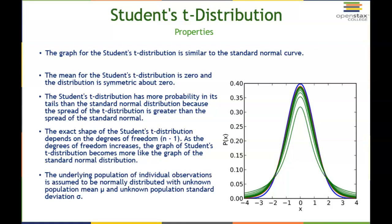The underlying population individual observation is assumed to be normally distributed with an unknown population mean and an unknown population deviation. If we have an unknown mean but a known standard deviation for our population, generally we will use a normal distribution and do a z score. When our population mean is unknown and our population standard deviation is unknown, then we will use this t score instead of a z score.